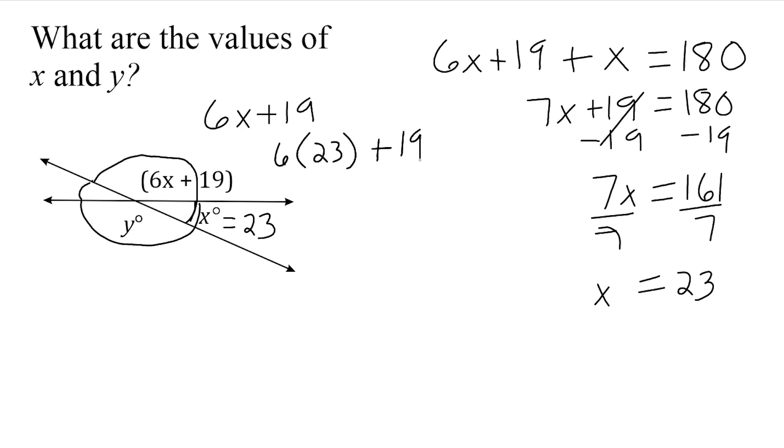Or what we can do is we can take 180 degrees and we can subtract from that 23 degrees because we know these two angles right here are supplementary. So we could figure out what y is either by solving for this and just saying that y is vertical to this so they're equivalent. Or we know that 23 plus whatever this is equals 180. Therefore we take 180 minus 23.